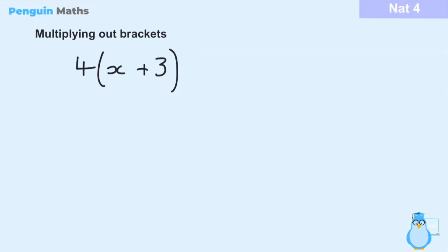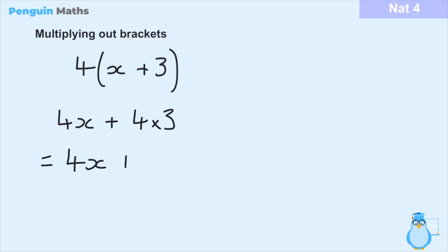From some of our previous lessons we've learned that in order to get rid of a set of brackets, what we must do is multiply the term on the outside of the bracket with each term inside the bracket. So for this example that would mean multiplying 4 by x and also 4 by 3. So we could say it would be 4 times x plus 4 times 3, and we know that 4 times 3 is equal to 12.